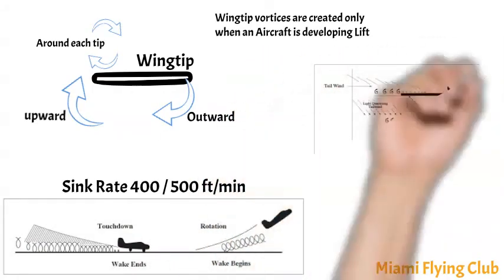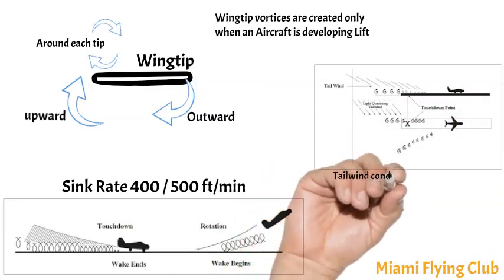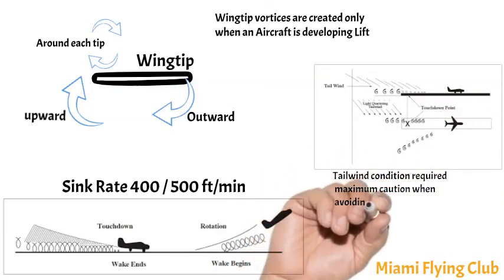Tailwind conditions can move the vortices of a preceding aircraft forward into the touchdown zone. A light quartering tailwind requires maximum caution.